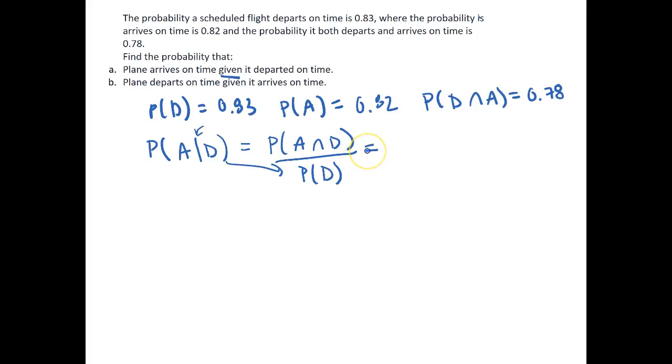This is simply then just equal to 0.78 over 0.83, which gives us a value of 0.9398. So this is the answer to part A.